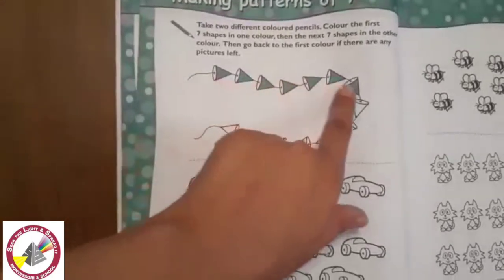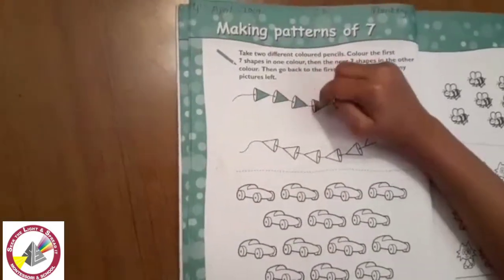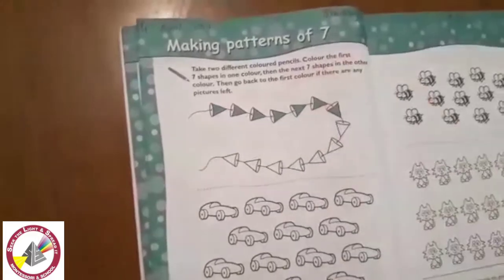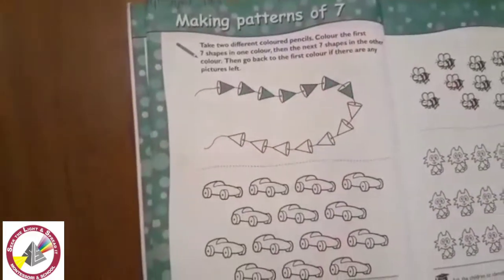Can you count the first seven cones for me please? Yes. One, two, three, four, five, six, seven. And what color are these first seven cones? Green. Green.